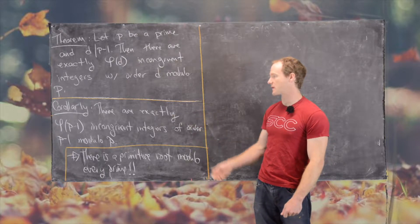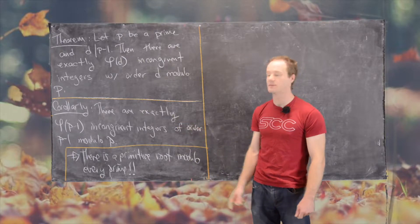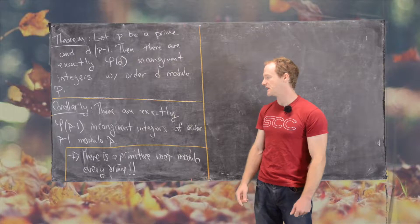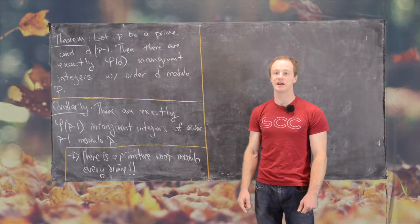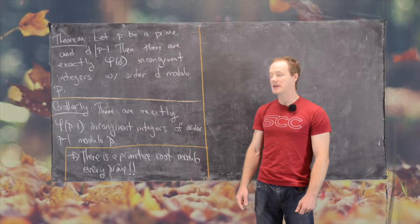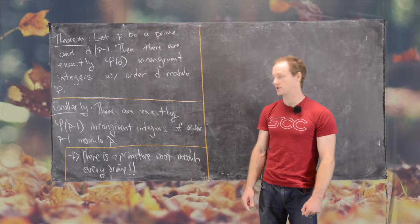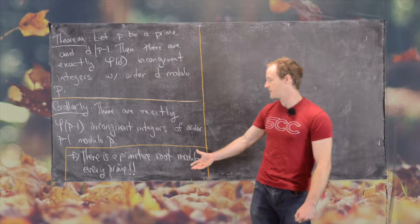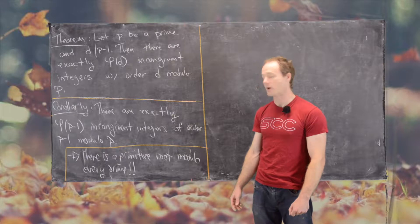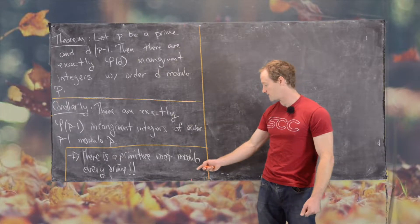The immediate corollary is: there are exactly φ(P−1) incongruent integers of order P−1 modulo P. The really important thing here is that an integer of order P−1 modulo P is a primitive root modulo P. In other words, there exists a primitive root modulo every prime.